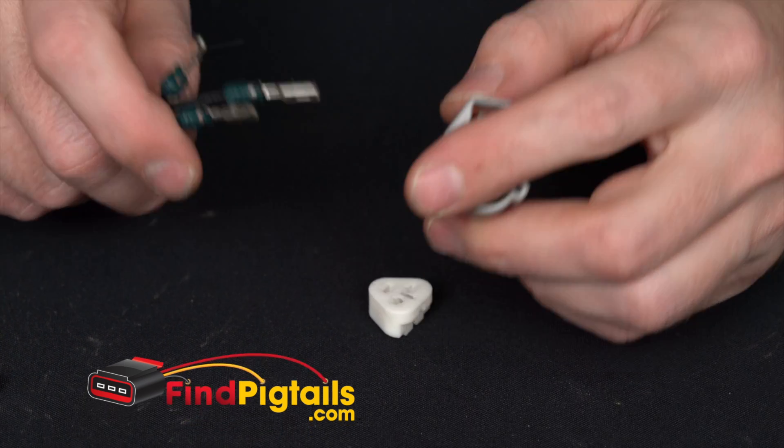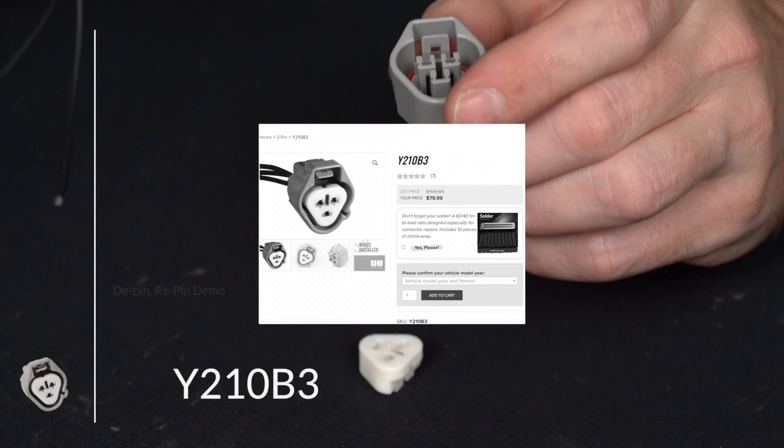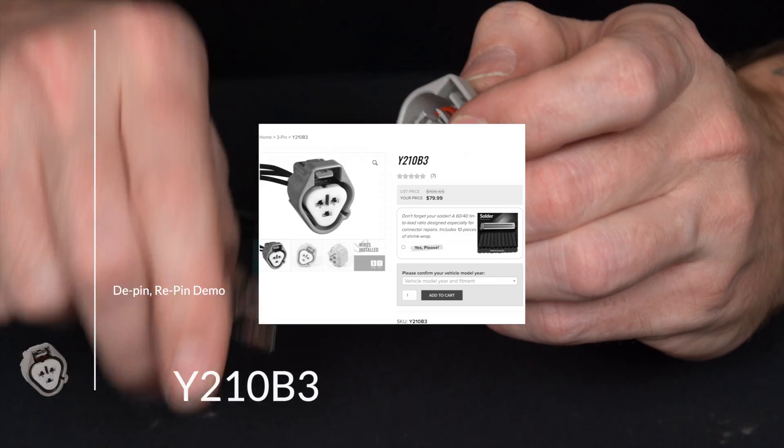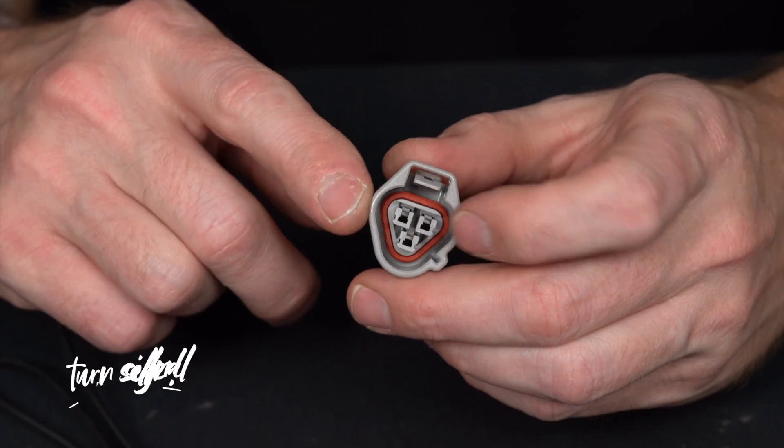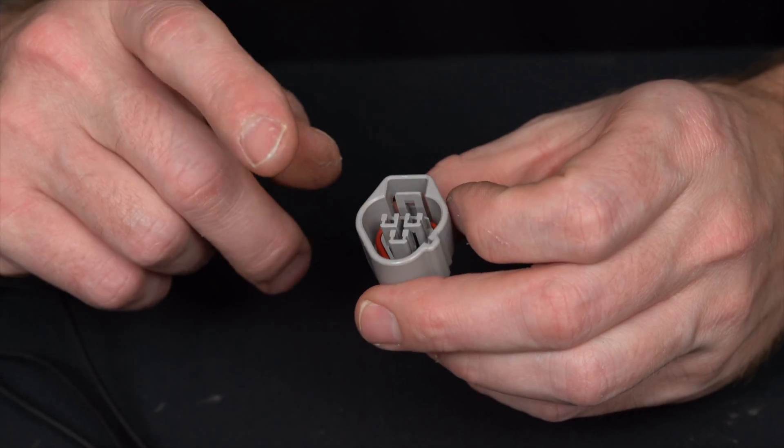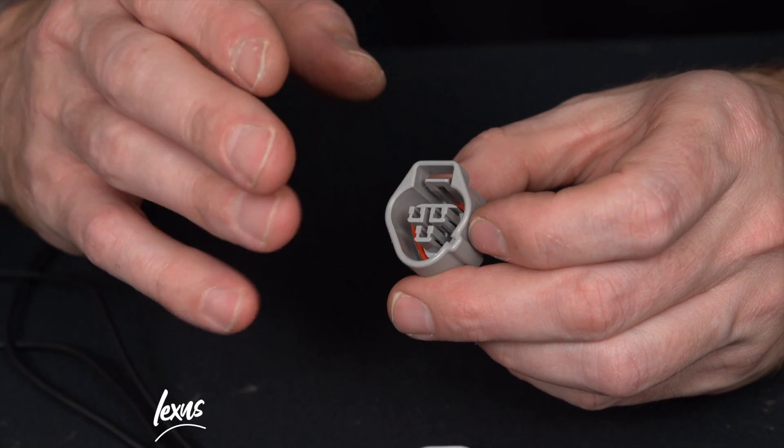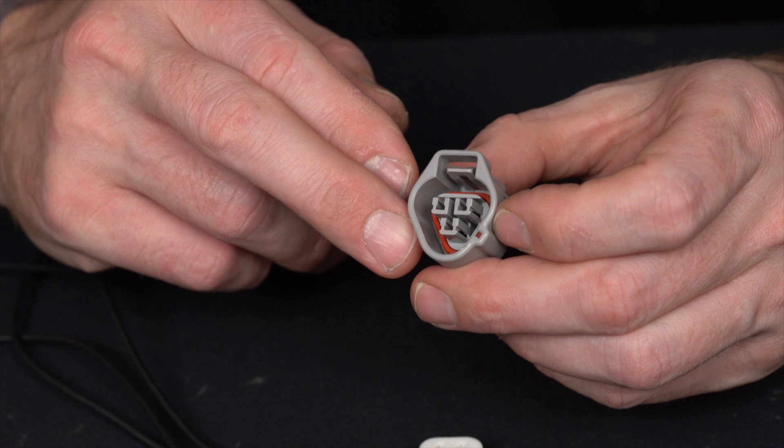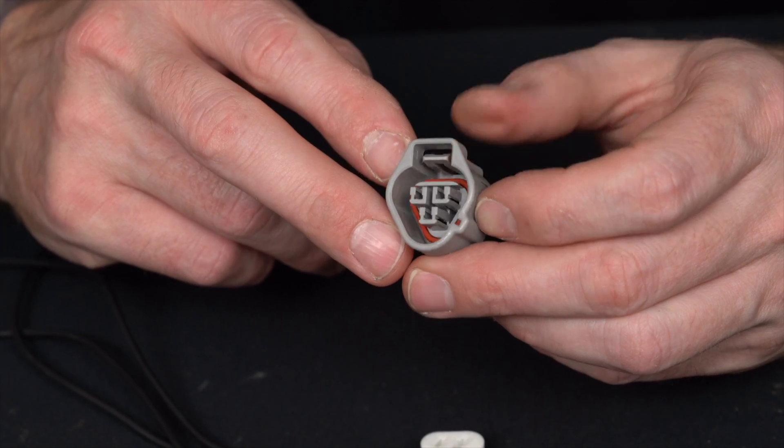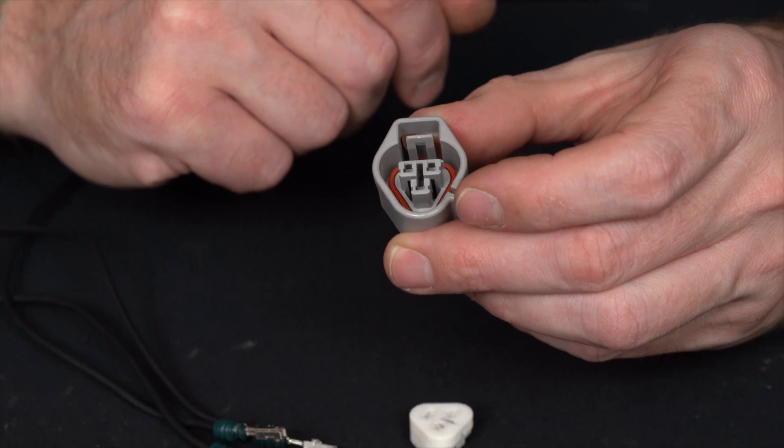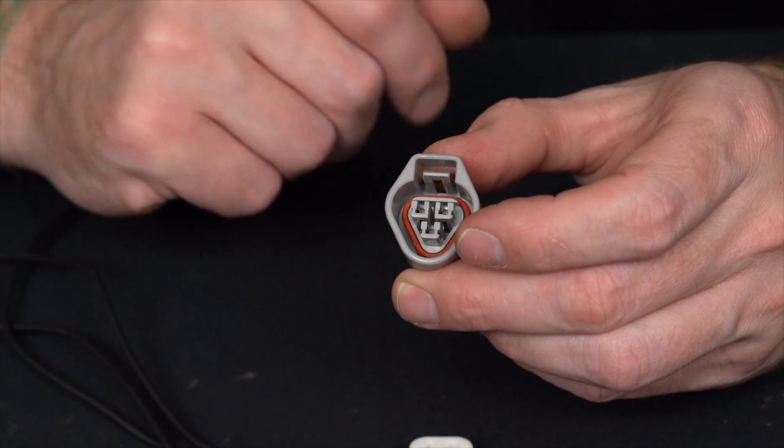Alright, so today what we're going to do is a de-pin repair demo on our part number Y210V3. This is going to be a very common turn signal connector. You'll see this on Toyotas, some Lexus, Nissan is a big one that we sell this for.